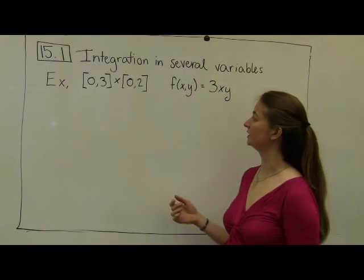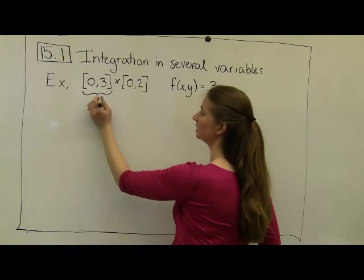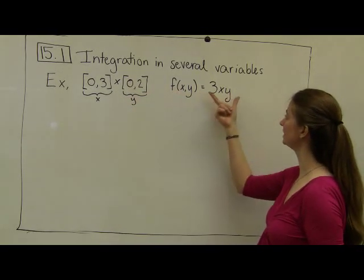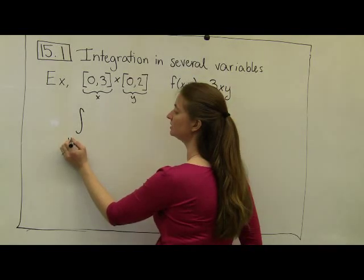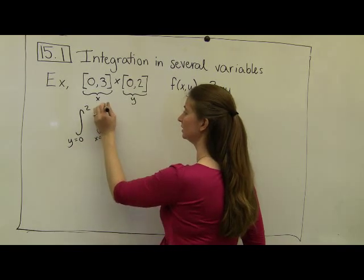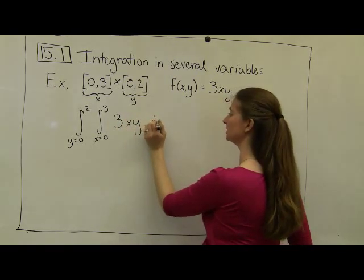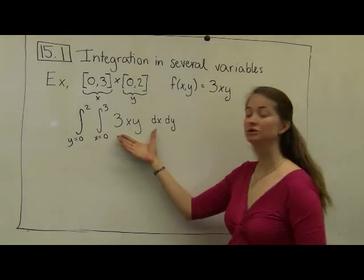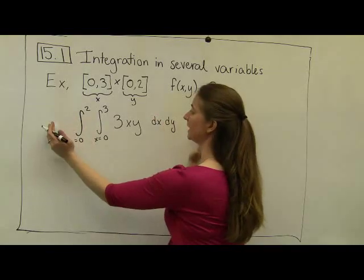Let's look at our first example of double integration. Let's say I have a rectangular region where my x coordinates go from 0 to 3 and my y coordinates go from 0 to 2. My function in this case is f of x, y equals 3xy. When I set this up to integrate, I put my y's on the outside — y goes from 0 to 2 — and my x values go from 0 to 3. My function is 3xy, and this is in terms of dx dy.